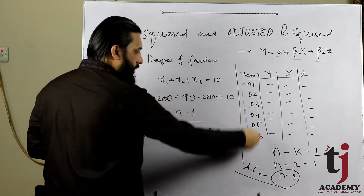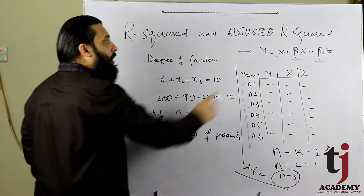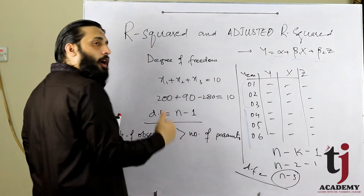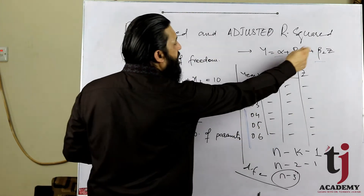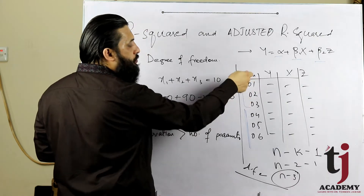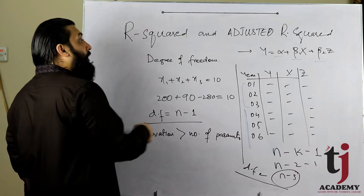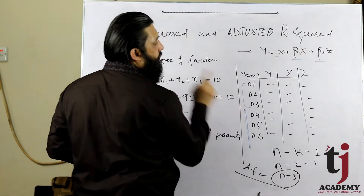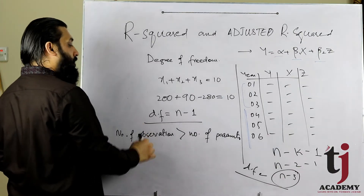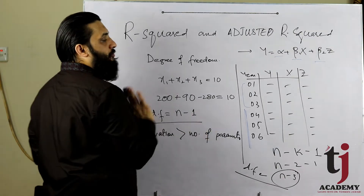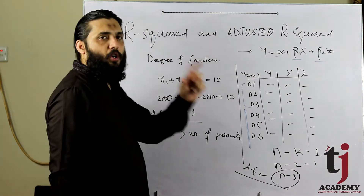Number of observations اگر number of parameters سے زیادہ نہیں ہوں گے تو regression run نہیں ہو سکتی، error دے گی۔ اس لیے کہا جاتا ہے کہ اگر آپ نے 3 parameters estimate کرنے ہوں تو کم از کم 4 observations ہوں، اگر 5 parameters ہوں تو کم از کم 6 observations ہوں — یعنی number of observations should be greater than number of parameters تاکہ regression run ہو سکے۔